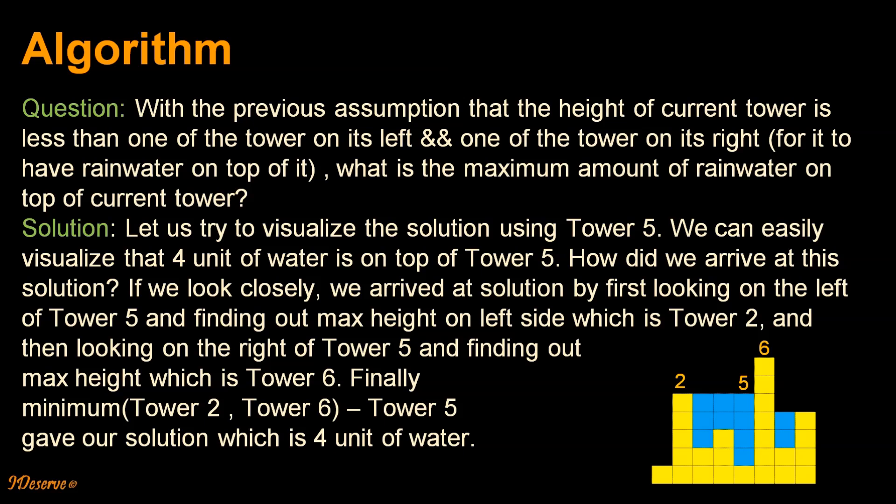So the next question is: with the previous assumption that the height of current tower is less than one of the towers on its left and one of the towers on its right for it to have some rain water on top of it, what is the maximum amount of rain water on top of the current tower?